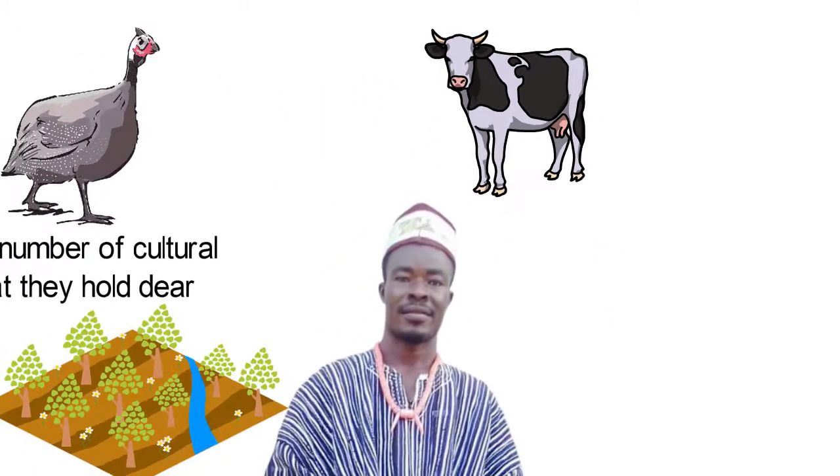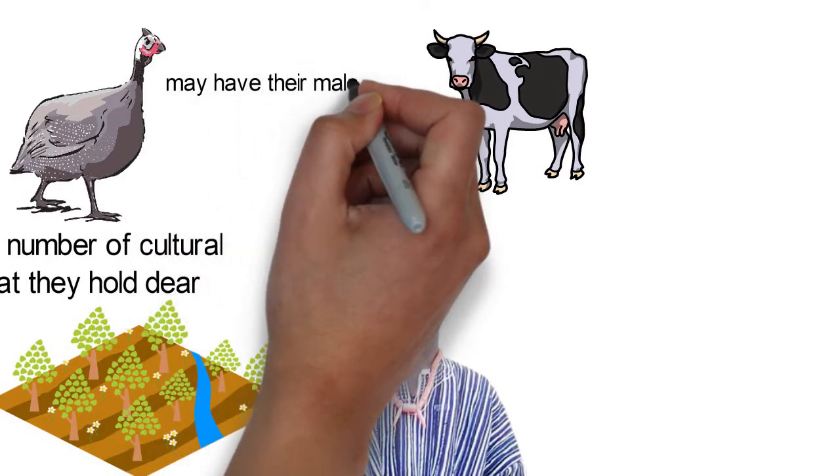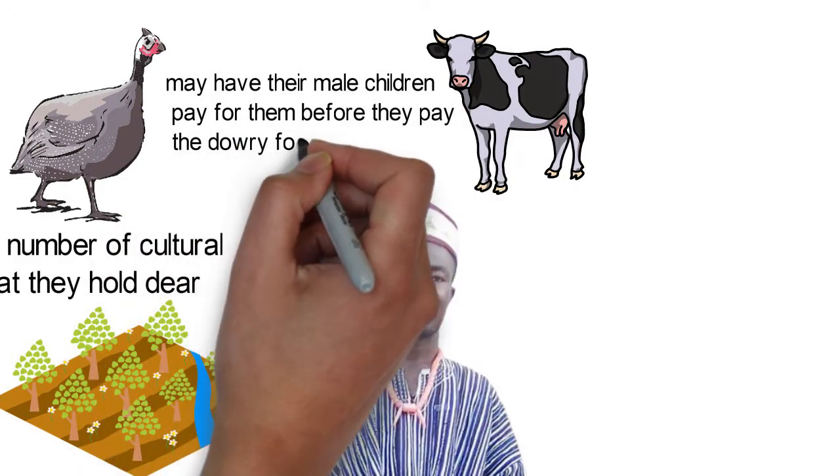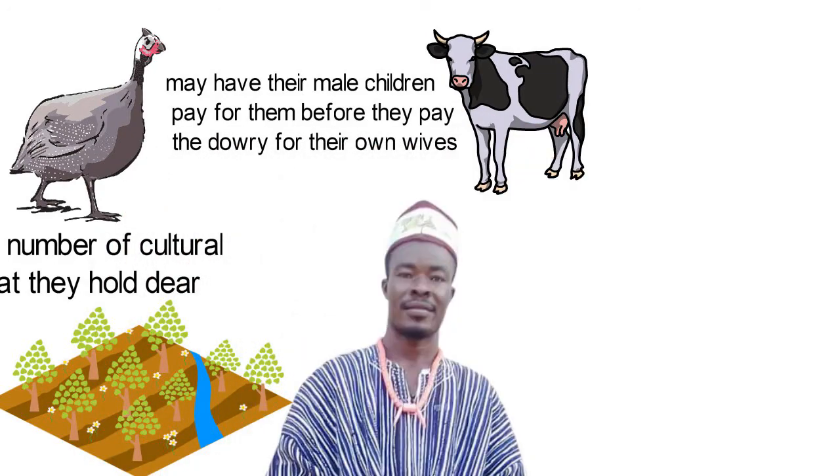Grooms who don't present a cow before marriage are obligated to do so after the bride dies. Intended grooms who can't afford the bride price may have their male children pay for them before they pay the dowry for their own wives.